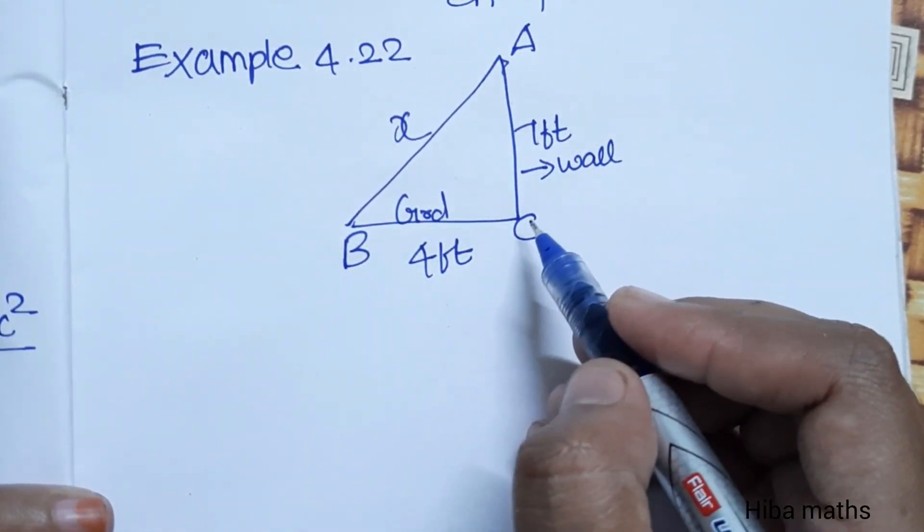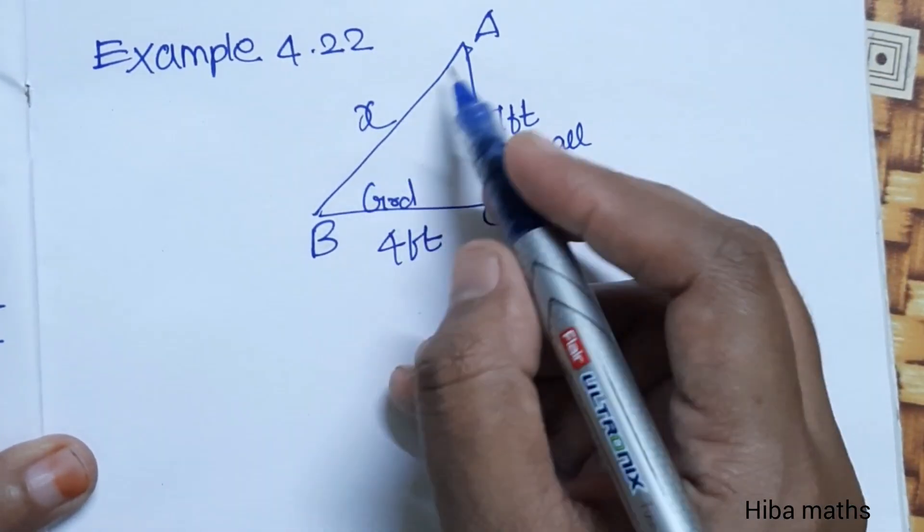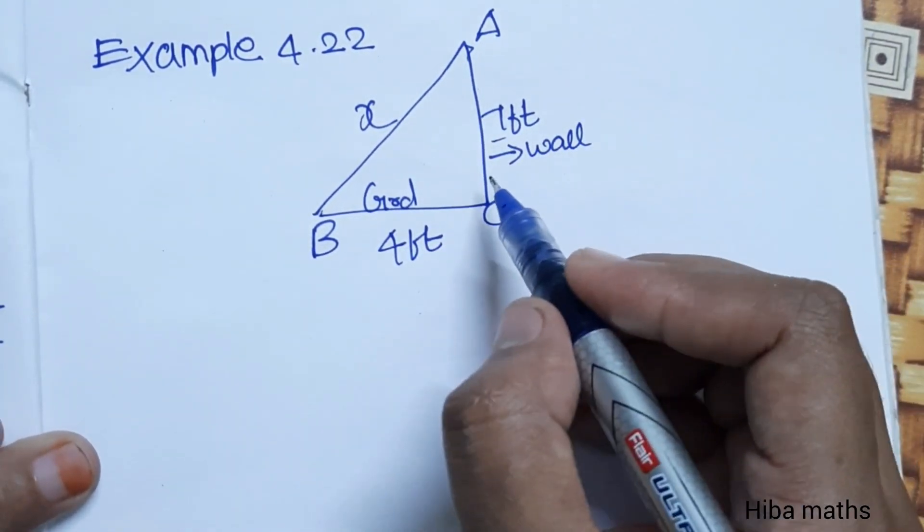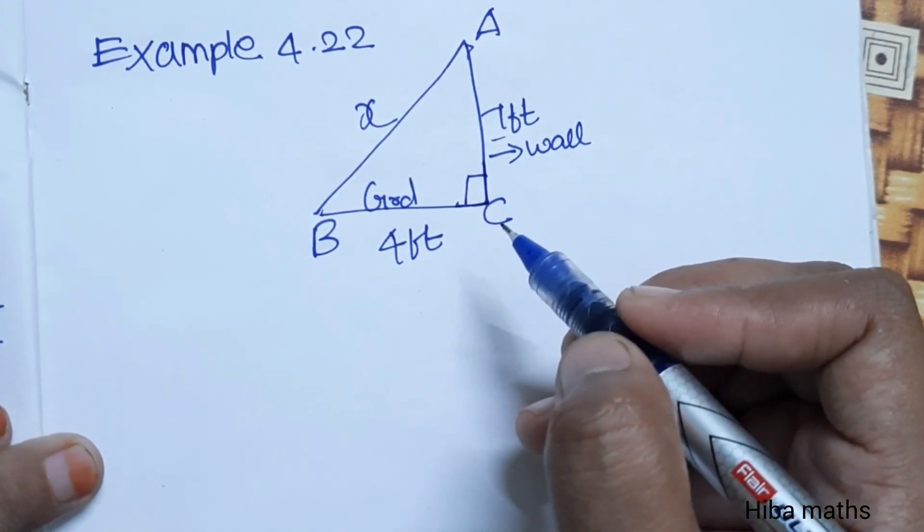The wall is 7 feet and the ground is 4 feet. We need to find the length of the ladder. The wall and the ground are at 90 degrees, so we use Pythagoras theorem.